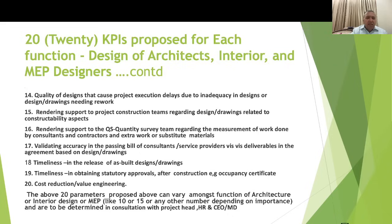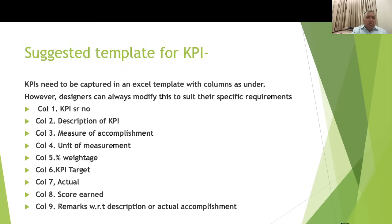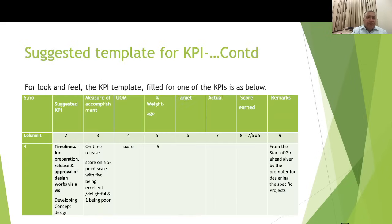The suggested KPI template is an Excel-style format with columns for: serial number, description of KPI, measurement of accomplishment, unit of measure, percentage weightage, KPI target, actual score earned, and remarks. For example, KPI number four — timeliness for professional release of approval of design works, specifically developing concept design — is illustrated. Since there are many designs and drawings, a scoring approach is proposed rather than tracking each individually.